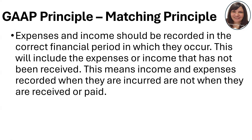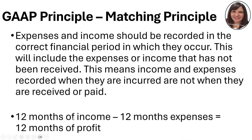This includes expenses or income that has not yet been received — meaning income and expenses are recorded when they are incurred, not when they are received or paid. In simple terms, the idea is that you want to calculate 12 months of profit: the matching principle means we need 12 months of income minus 12 months of expenses to get 12 months of profit.